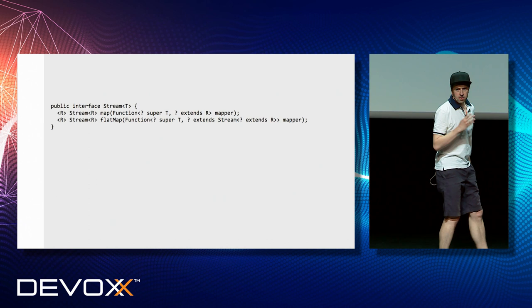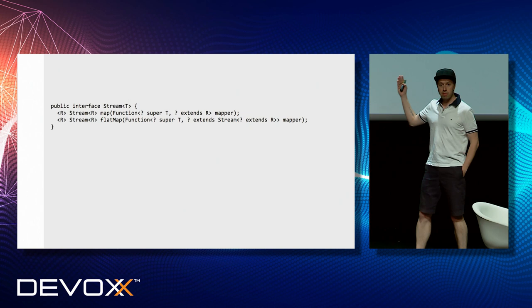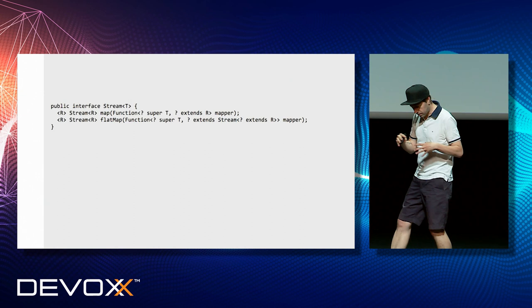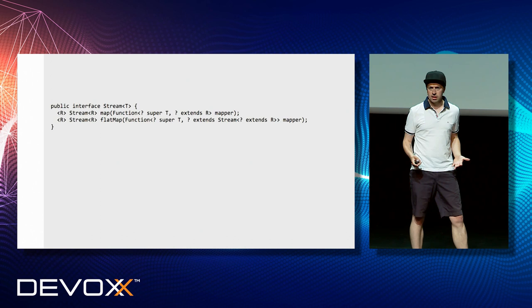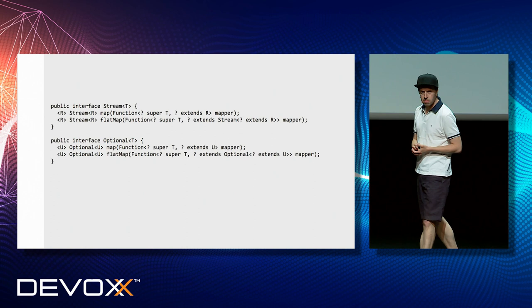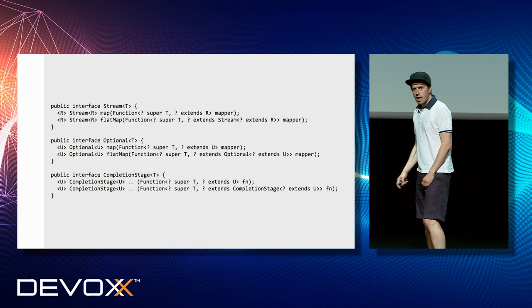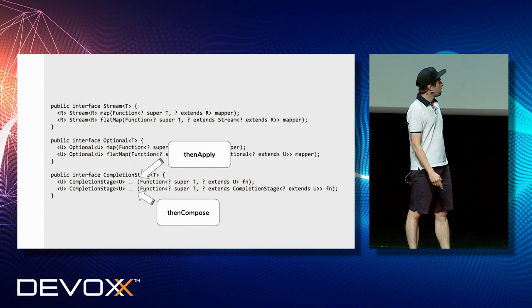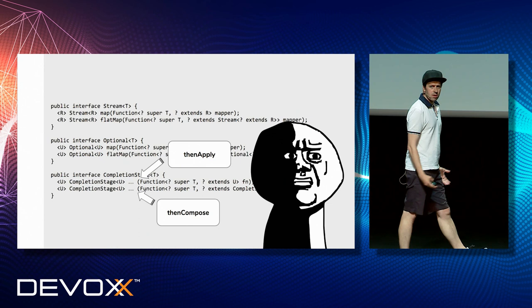For example, you should be familiar with the stream interface. Regardless whether it's monadic or non-monadic, every stream interface has these two methods: map and flat map. Mapping converts the values in a stream to other values, and flat map flattens a stream. That's fairly easy. Then you go to Optional, which has the same premise — you find the same methods, you know what they are doing. Then you go to CompletableFuture or CompletionStage, which is based on the same example. And then you have 'then apply' and 'then compose.' That doesn't work.